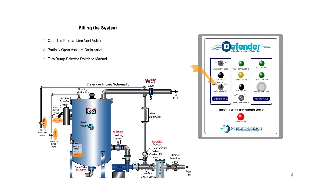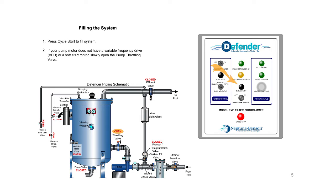Filling the system. Open the pre-coat line vent valve. Partially open vacuum drain valve. Turn bump selector switch to manual. Press cycle start to fill system.